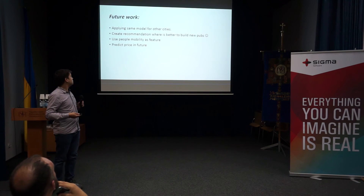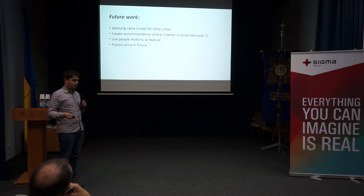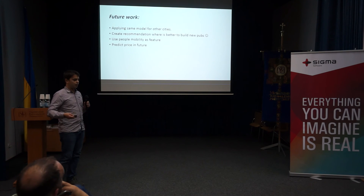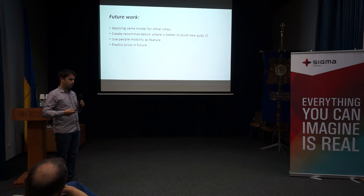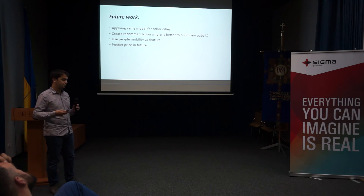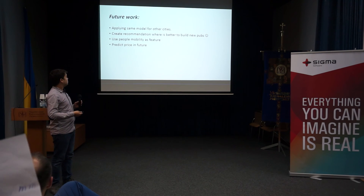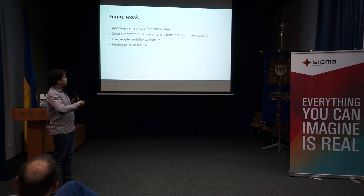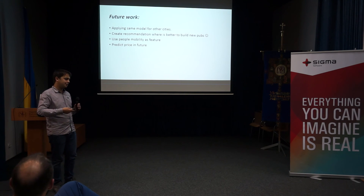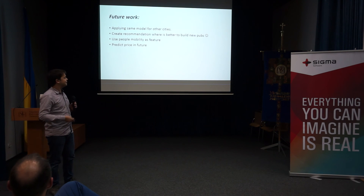Future work that can be done within this project includes applying the same model to other cities. The Foursquare data is available — we can get it via Twitter and there are many APIs. For example, venue categories for check-ins come from the Foursquare API, which is free and open data. We actually tried to apply this for New York, but the house price data was structured a bit differently, so we didn't present those results.